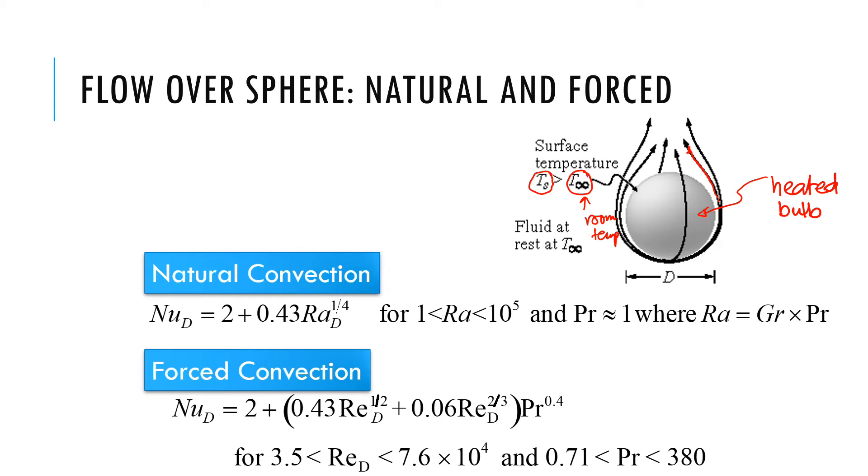For this we expect a correlation with Grashoff number because there's no u infinity that we have, so it's not forced convection. The correlation should be in terms of Grashoff number, which is exactly what we see. For natural convection we have this correlation where Rayleigh number is in terms of Grashoff and Prandtl. Nusselt number again is H times D over K of fluid.